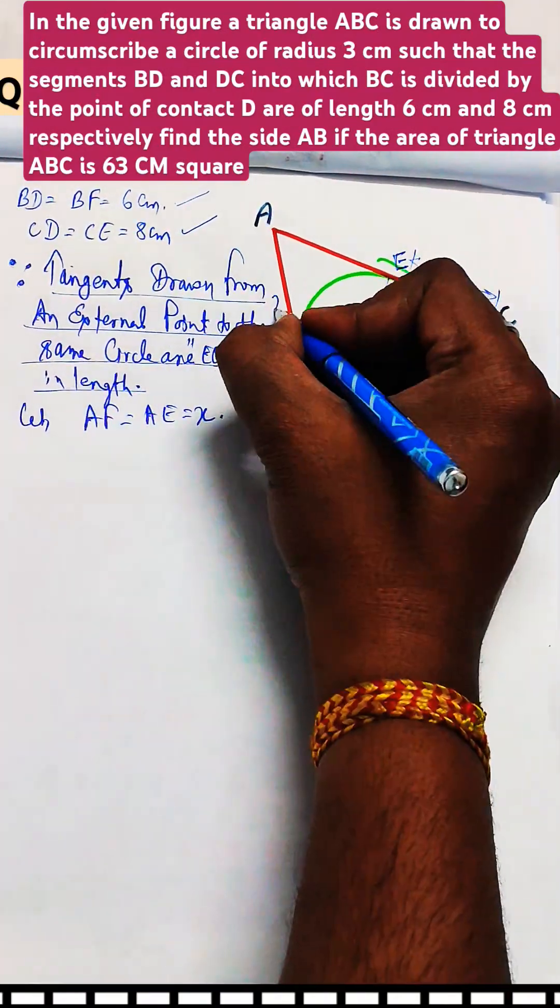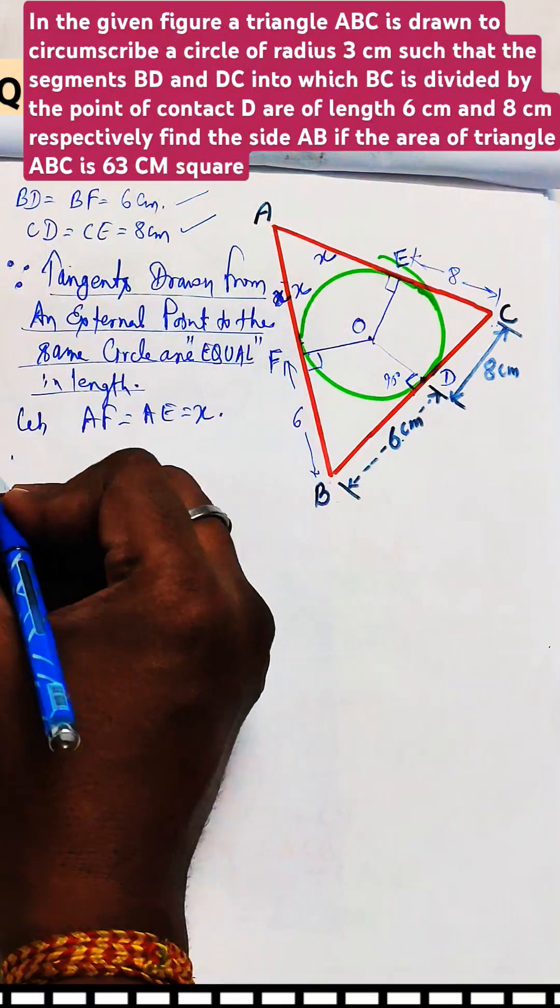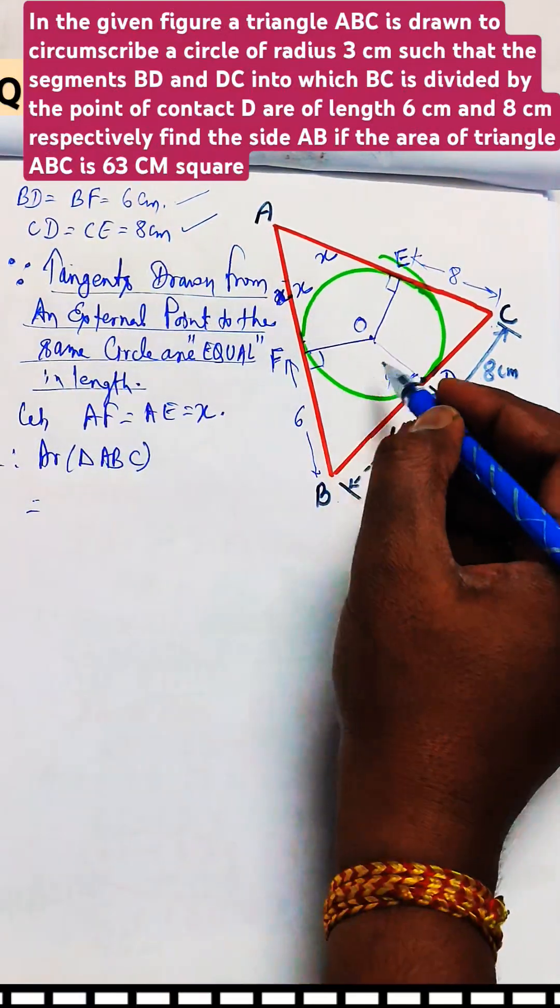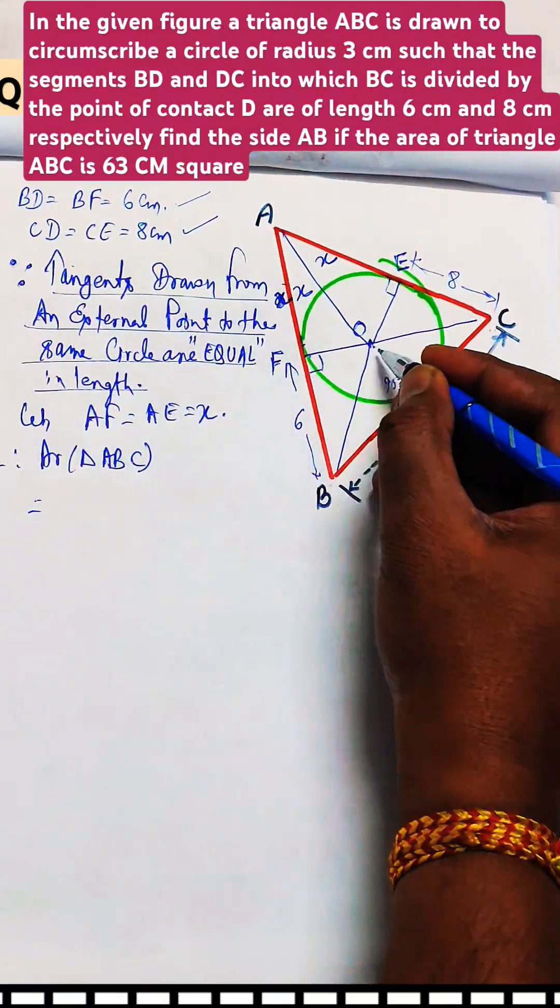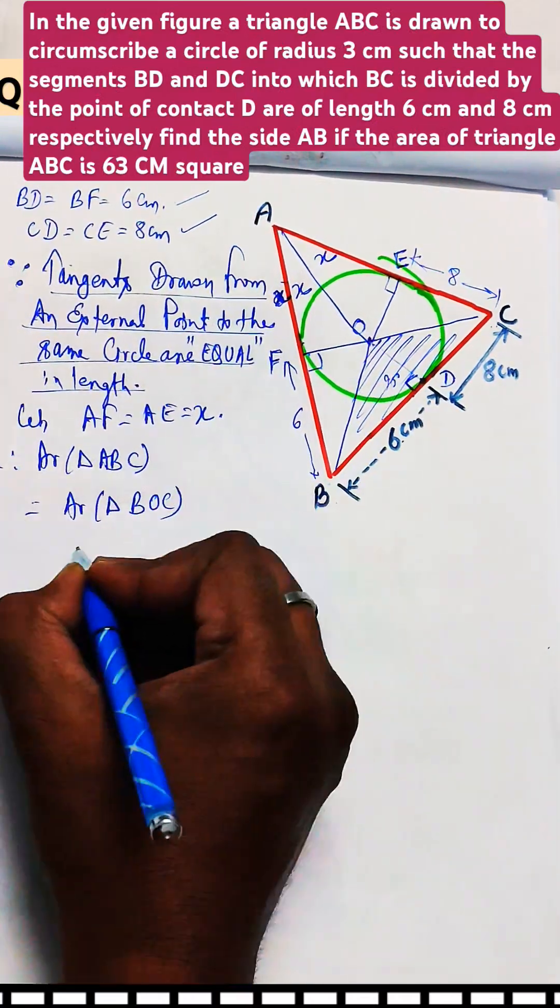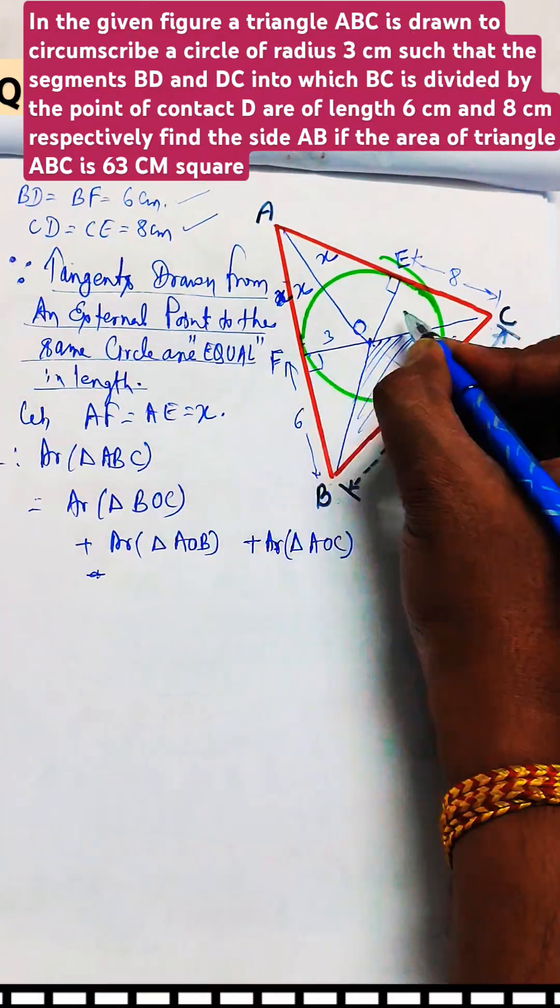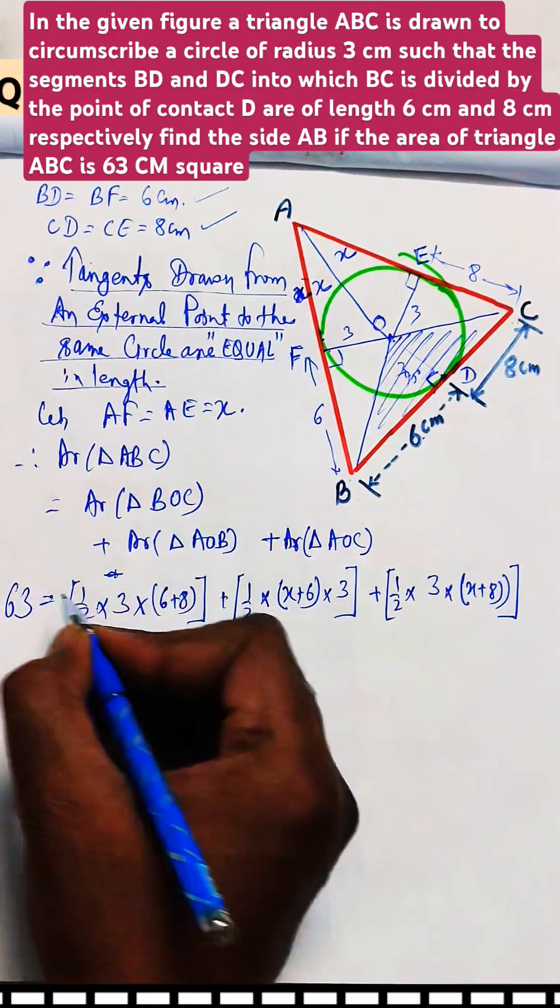Area of triangle ABC is given as 63. So this will equal to all the three triangles which are formed inside it. And area of a triangle is half into base into altitude. So in this way we calculate the value of X as 7 and AB as 7 plus 6.